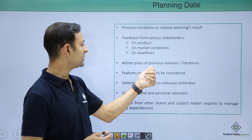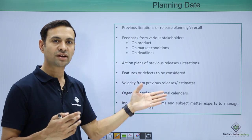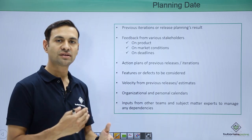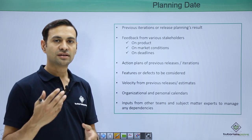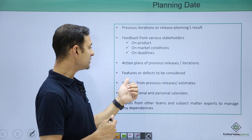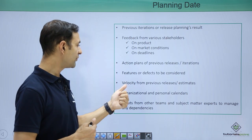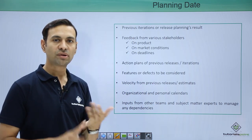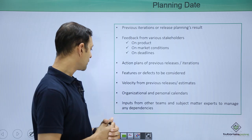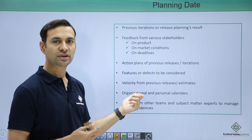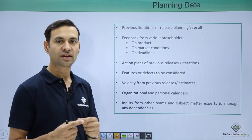An action plan on previous releases and iterations basically states: the problems we faced during previous iteration or release development should not occur again. We review what action items were taken so we can develop without any glitch. Features or defects to be considered are enhancements to be done to the product. Velocity from previous releases is also an input — it tells us the effort estimate put during development. Organizational and personal calendars indicate how many holidays fall in this time frame so we can establish our schedule.